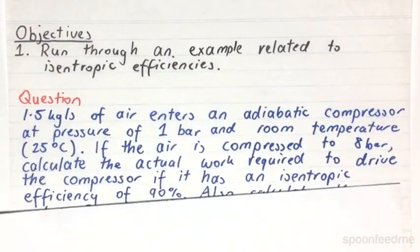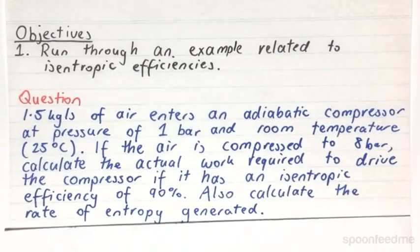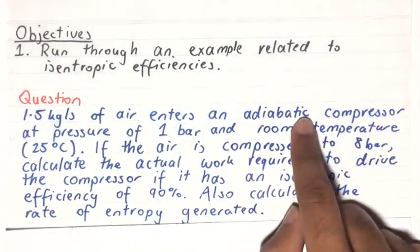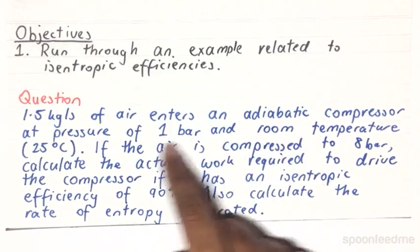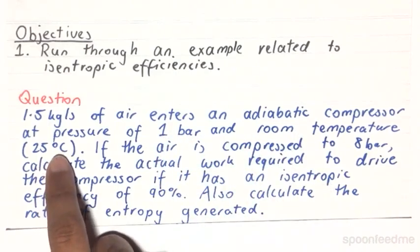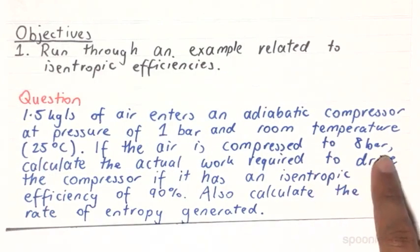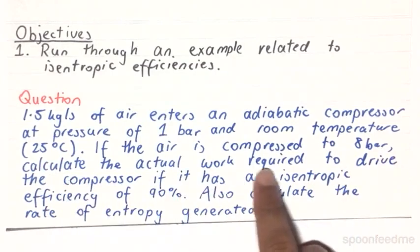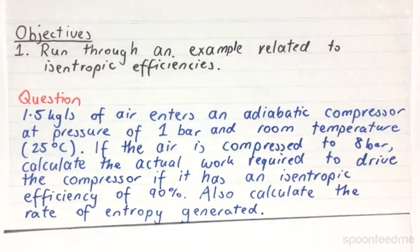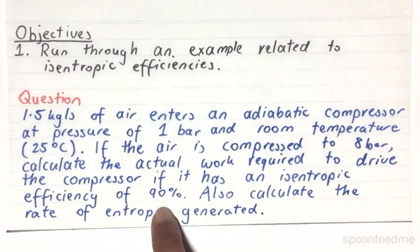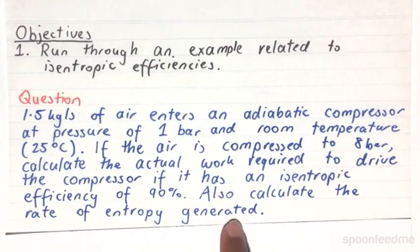Our question states that 1.5 kilograms per second of air enters an adiabatic compressor at pressure of 1 bar and room temperature, which is 25 degrees Celsius. If the air is compressed to 8 bar, calculate the actual work required to drive the compressor if it has an isentropic efficiency of 90%. Also calculate the rate of entropy generated.